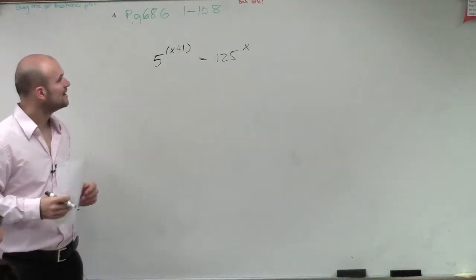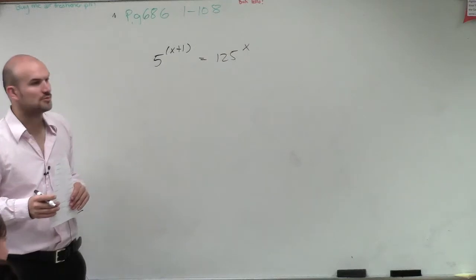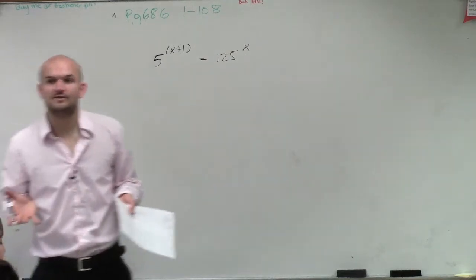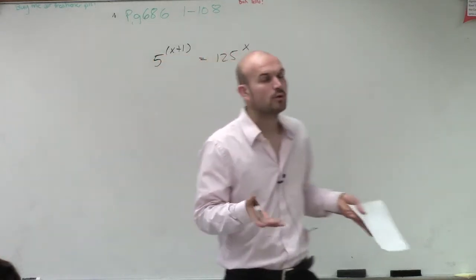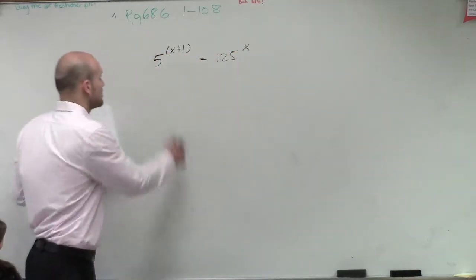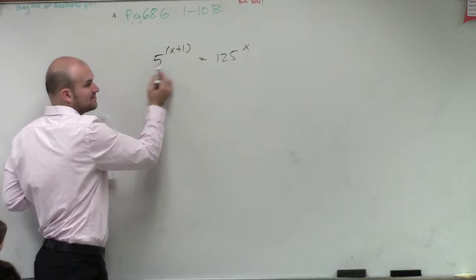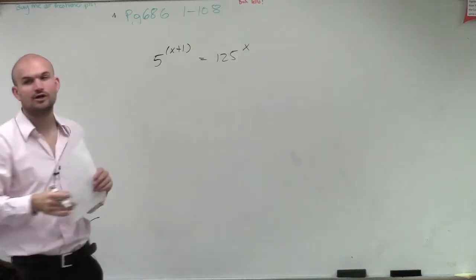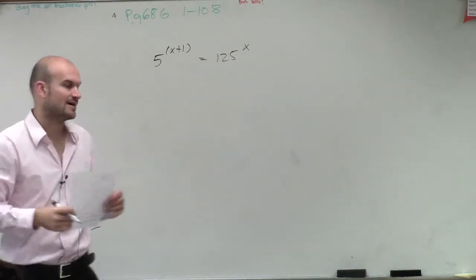So what we have here is 5 raised to the x plus 1 equals 125. Now, remember, guys, we have to use what we'll call the one-to-one or equality property, which means we need to make sure these are the same bases. So what I'm going to do is rewrite. If I know this is 5, I want to see, can I rewrite 125 to the base 5?